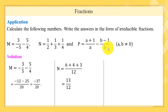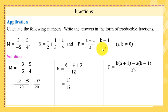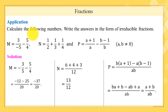Finally, p = (a+1)/a − (b−1)/b, where a and b are non-zero. Using the subtraction property: p = [b(a+1) − a(b−1)] / (ab). Expanding the numerator: b·a + b − a·b + a = ba + b − ab + a. Since ba − ab = 0, therefore p = (a + b)/(ab).